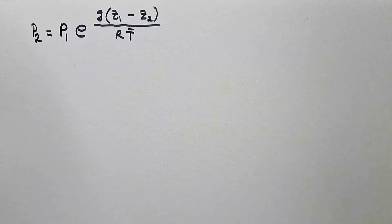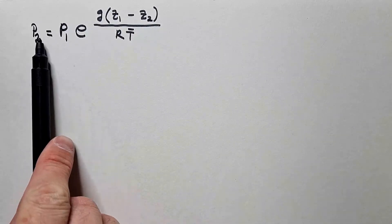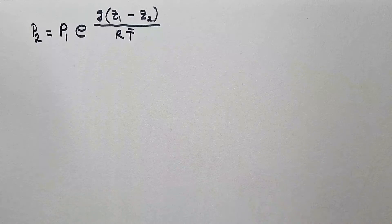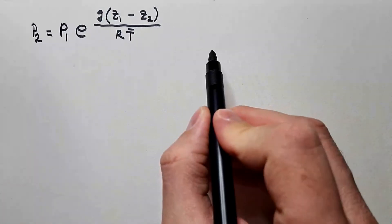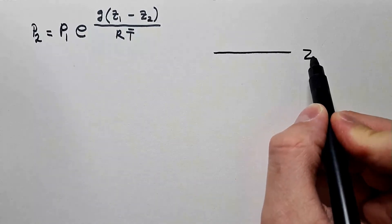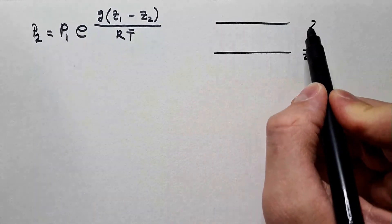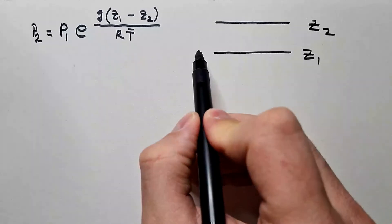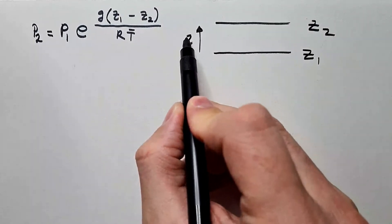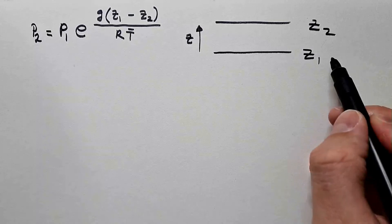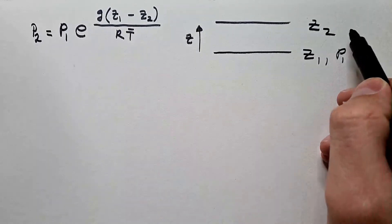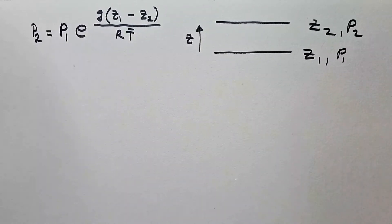In one of the previous videos, we derived barometric formula that tells us how the pressure is changing with height and we discussed this in details. Here, remember that if this is height Z1 and let's say here is height Z2 above the surface, so this is how height is increasing.